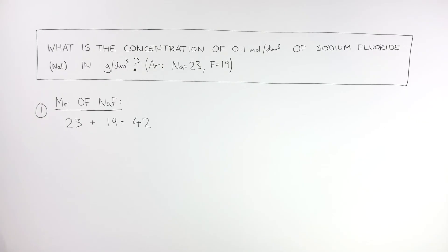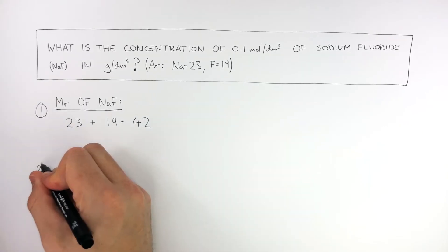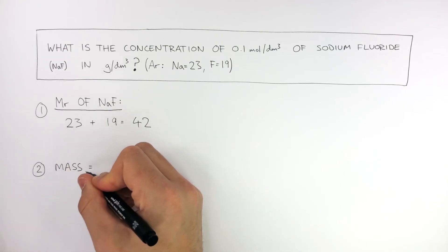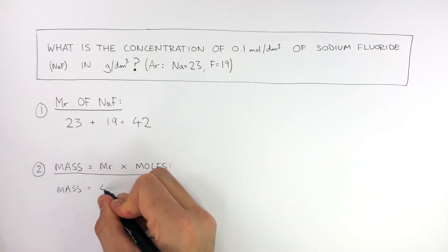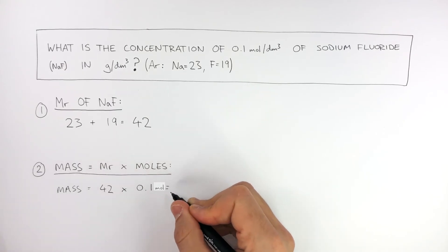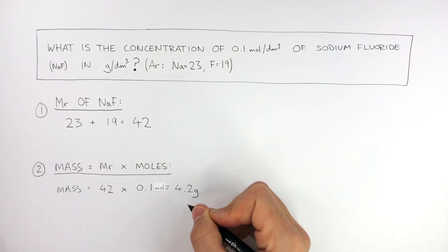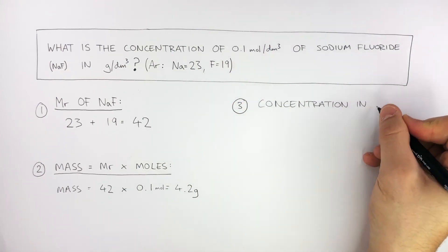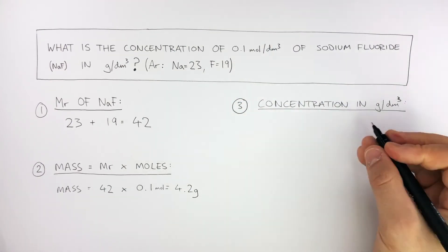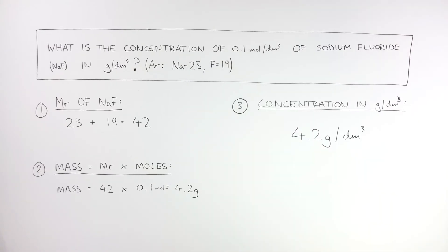And because the question is asking us to go from moles to grams, moles per decimeter cubed to grams per decimeter cubed, we use the equation mass equals MR times moles. So mass equals 42 times 0.1 mole. This equals 4.2 grams. The third step is converting this into concentration in grams per decimeter cubed, so this is just 4.2 grams per decimeter cubed.